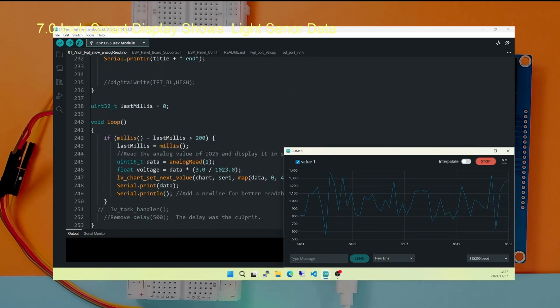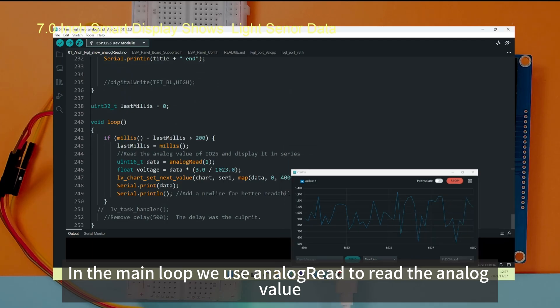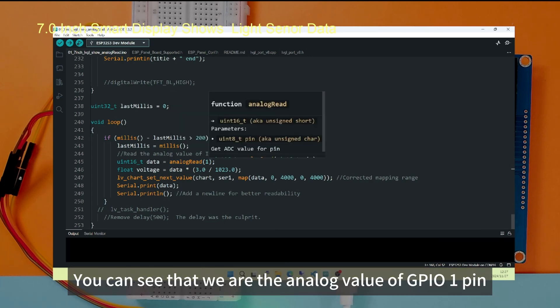Let's look at the main loop. In the main loop, we use analog read to read the analog values. You can see that we are the analog value of GPIO 1 pin.